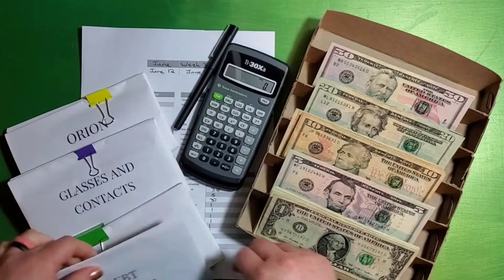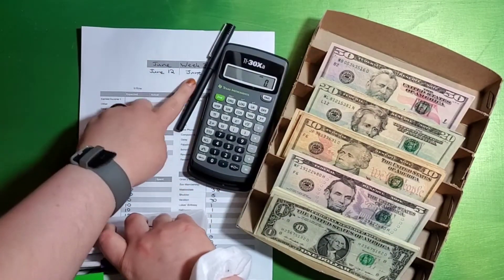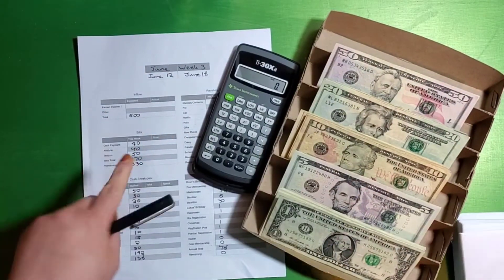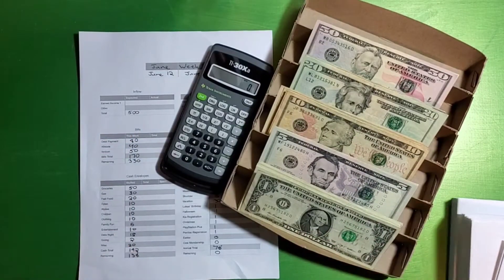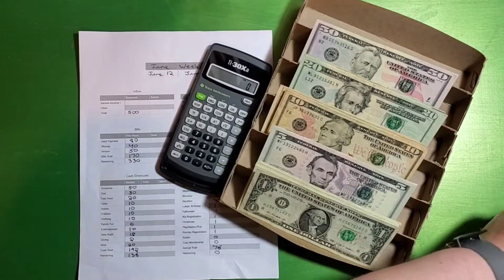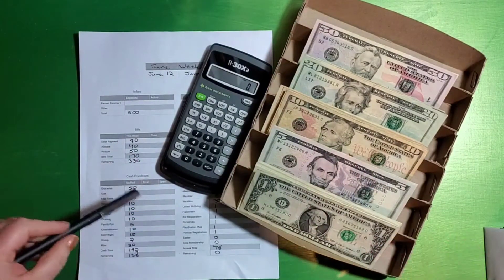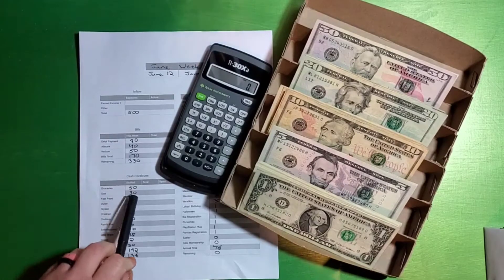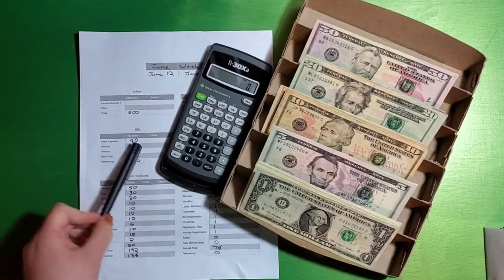Today we're cash stuffing for the week, the third week of June, which is June 12th through June 18th. We'll be cash stuffing $500 as per usual. We're pretty much just going to do $500 almost every week. Sometimes it's a little bit more if we're doing some grocery shopping for other people that live in our house.